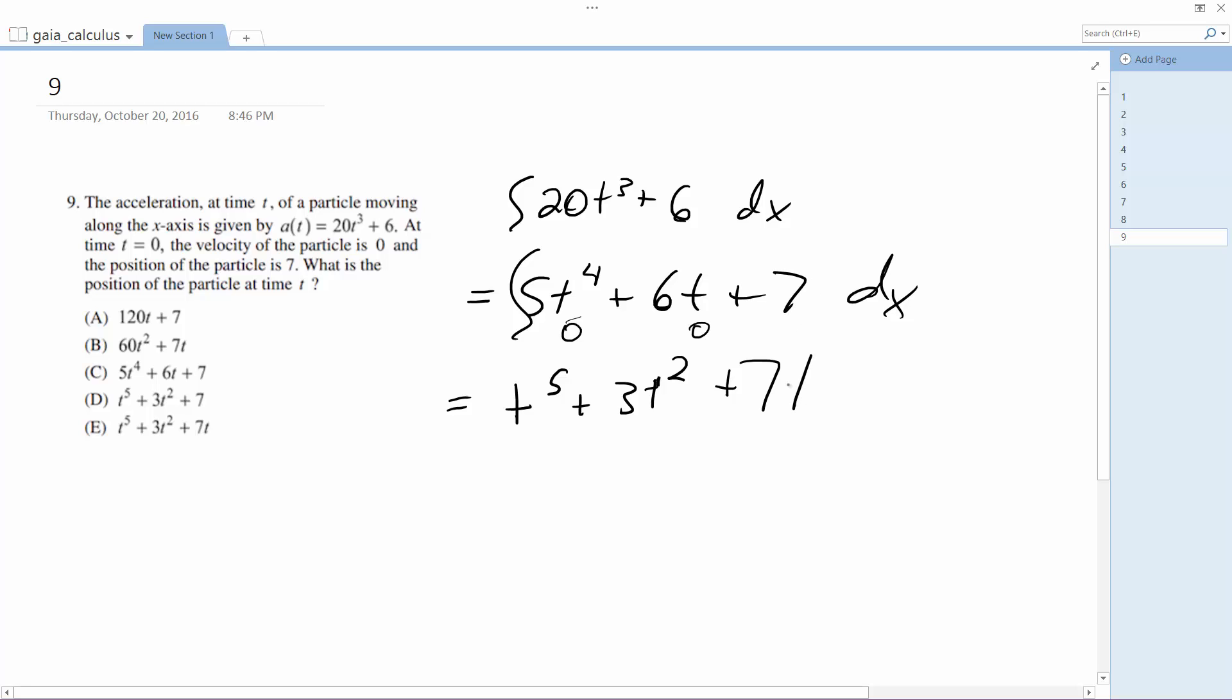So we integrate it again, we get t. That's the part you've got to be careful about, and this is how you get your final answer. So it's t to the 5th plus 3t squared plus 7t. So the answer is actually e.